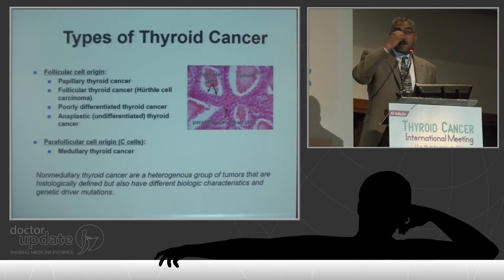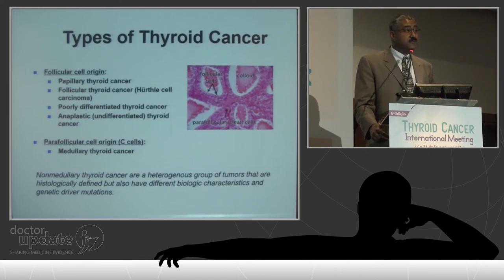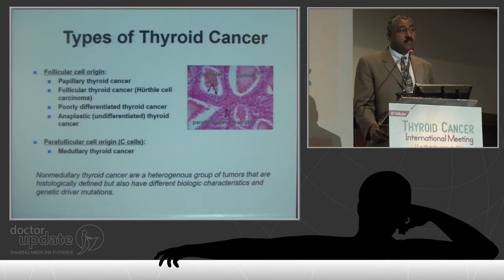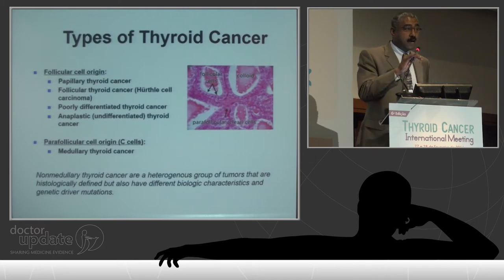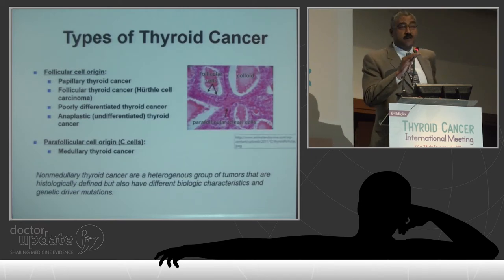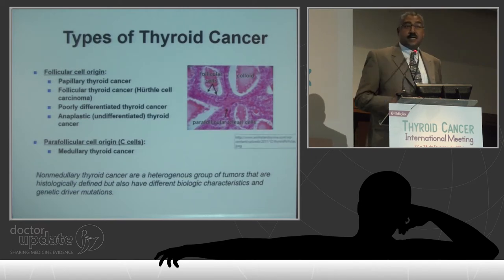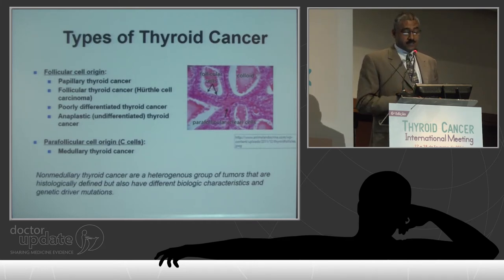Many of you know the different types of thyroid cancer. Follicular cell origin is what we're talking about here — principally differentiated thyroid cancer, and papillary thyroid cancer, which is the most common type. What's really important is that besides histologic classification, the natural history of different histologic types of papillary thyroid cancer — the follicular variant, the more aggressive entities, sclerosing variants — have a really different natural history and outcome.